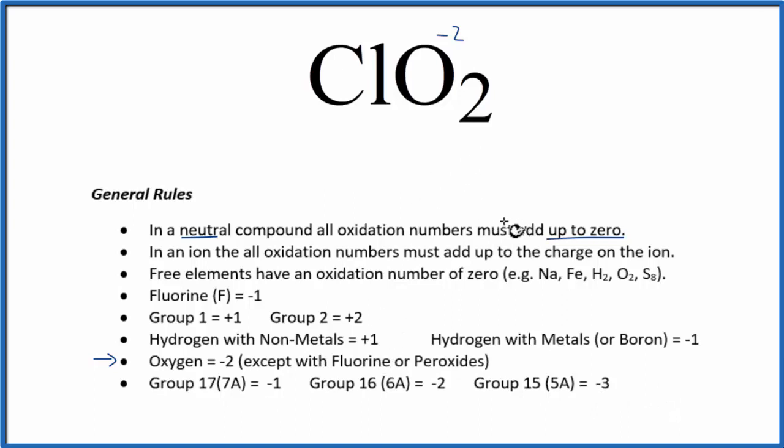So we can set this up like an equation to figure out the chlorine. We can say chlorine, which we don't know is X, plus the minus two for the oxygen, and we have two oxygens, so that's two. All of that needs to equal zero because this is a neutral compound. Solve for X and X equals plus four. And that is the oxidation number on the chlorine in ClO2.